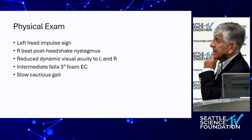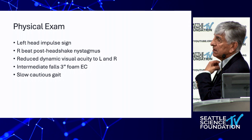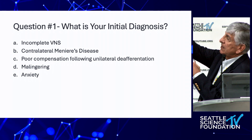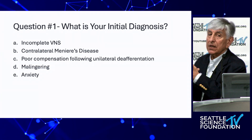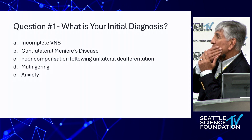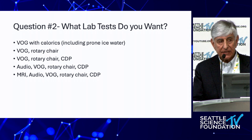On examination: post head-shake nystagmus indicating uncompensated vestibular asymmetry. Even with complete unilateral loss, most patients compensate quickly. The concern here is why they haven't compensated. Caloric testing only stimulates the lateral canal — with ice water supine and prone calorics performed, the response was absent, confirming a dead labyrinth. The pattern indicates poor compensation — an uncompensated peripheral vestibular weakness.